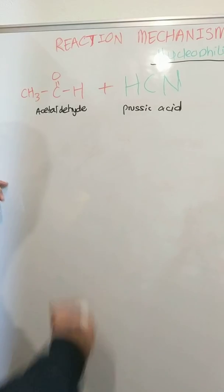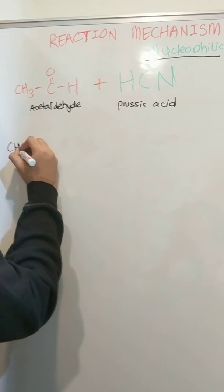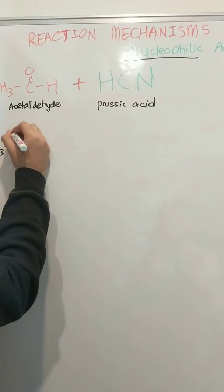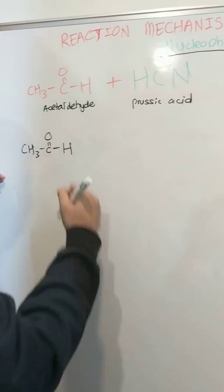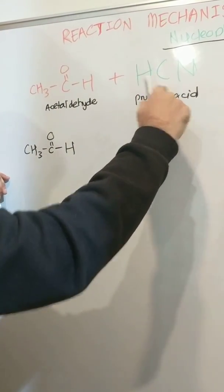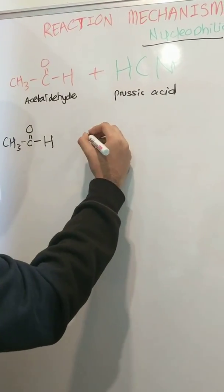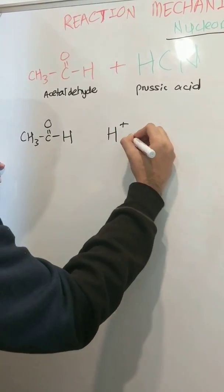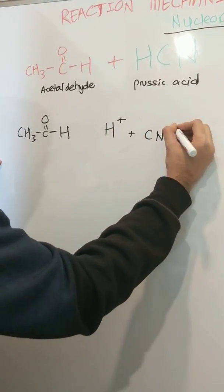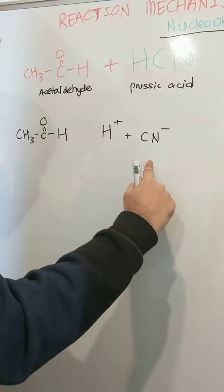First off, we should realize that the attacking reagent here is Prussic Acid, so like all acids, Prussic Acid is going to break down into Hydrogen ions and Cyanide ions.